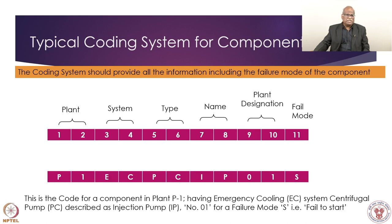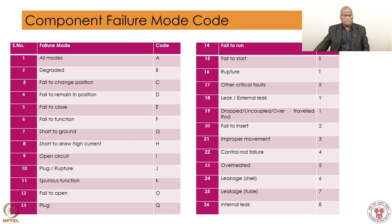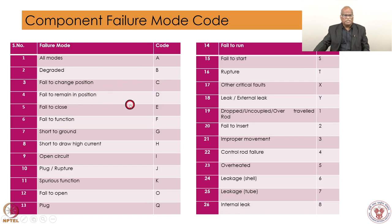Component failure modes — I have taken this list from the International Atomic Energy Agency. The code S for 'fail to start' is internationally accepted and was used in our example for a centrifugal pump. For degradation, we use B; for fail to change position, another code is used. Fail to remain in position is D, fail to close is E. All alphabet letters have been used along with some numerical values and all failure modes have been defined. This is an international coding system and you can use it ready-made.